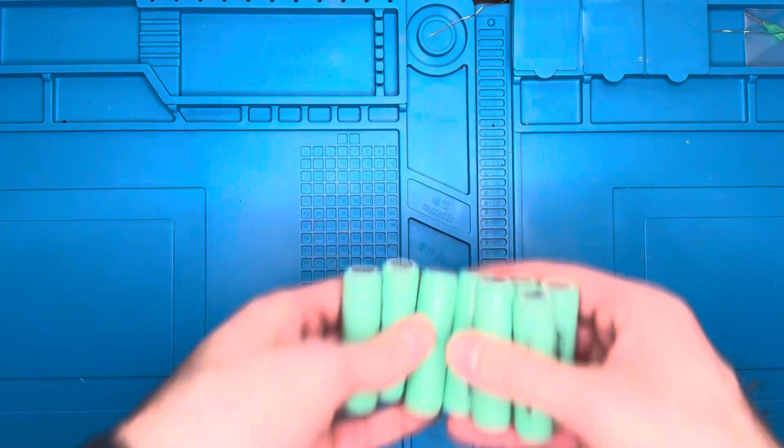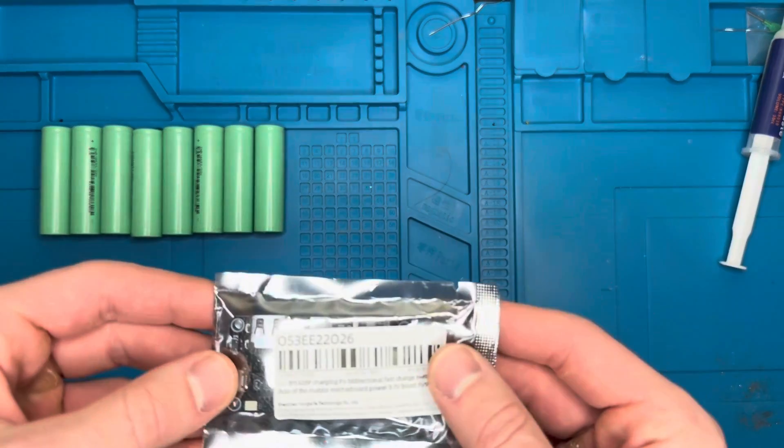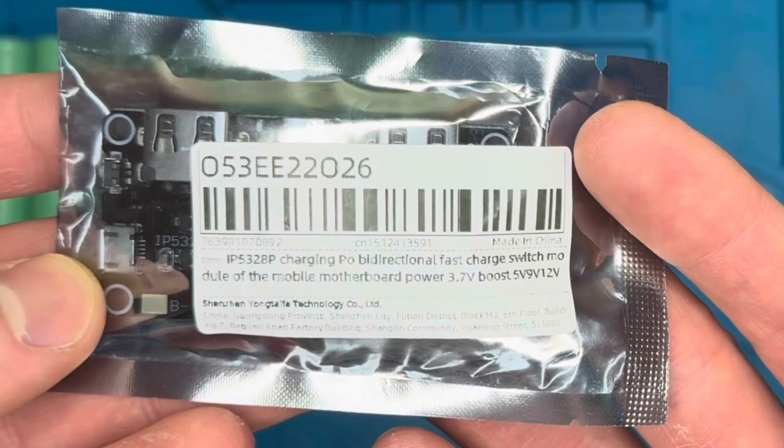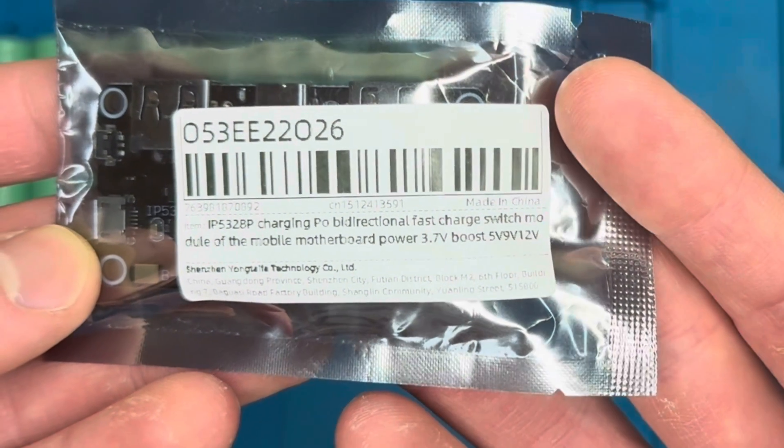Today we're going to turn these 18650s into a power bank. Here we have an IP5328P charging board.